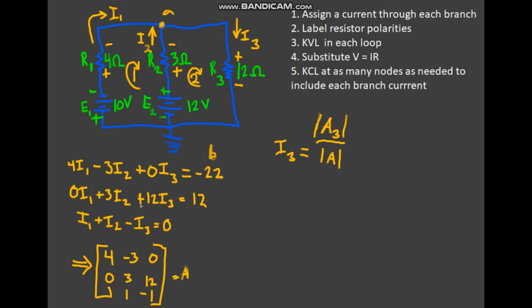If we wanted to solve for current two, we would take negative twenty-two, twelve, and zero and we plug it into the second row here. If we wanted to solve for I₂, so we're solving for I₃, so we're going to take the determinant of A₃. So this would be columns one and two are going to remain unchanged.